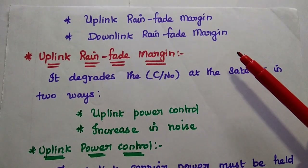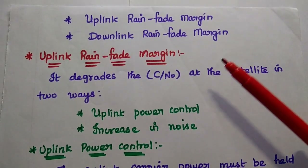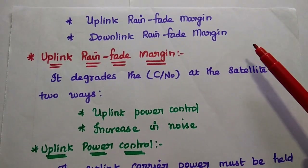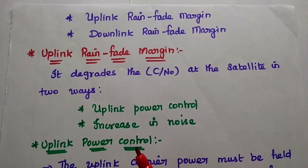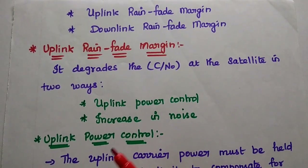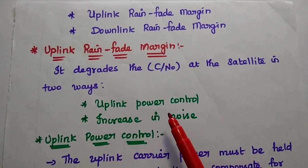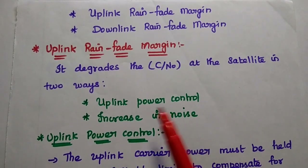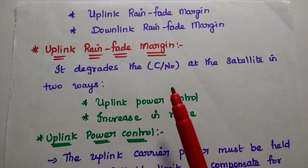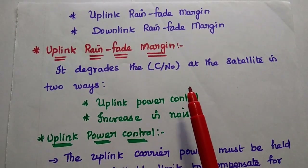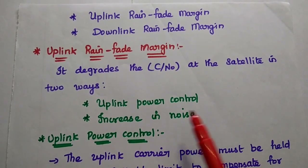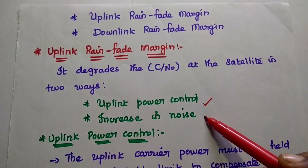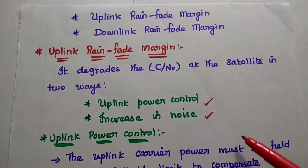In satellite communication, the uplink and downlink both have different rain fade margins. For the uplink rain fade margin, whenever we transmit the signal from the earth station to the satellite, the rainfall degrades the carrier-to-noise ratio at the satellite in two ways: one is by affecting the uplink power, and the other is by increasing the noise temperature.